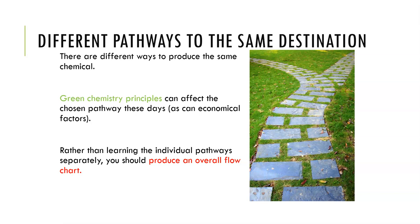So there are different ways for us to judge which pathway would be a better idea if we're trying to make a chemical. One of those criteria is called green chemistry principles. These can affect the chosen pathway as well as economical factors. Green chemistry principles — although the name might indicate they may just be about the environment — they're not. The main guiding principle to green chemistry is benign by design, meaning we're trying to use less toxic chemicals that would be harmful to people or the environment, use less energy, and things like that. There are 12 principles that we will look at briefly that guide these kinds of decisions.